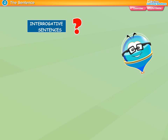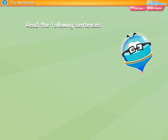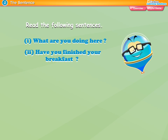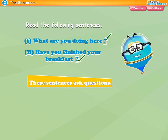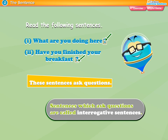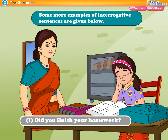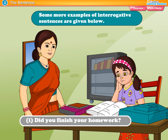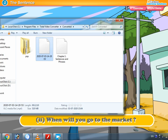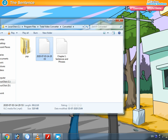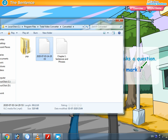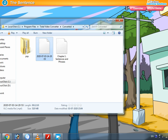Interrogative sentences. Read the following sentences: 'What are you doing here?' 'Have you finished your breakfast?' These sentences ask questions. Sentences which ask questions are called interrogative sentences. Some more examples: 'Did you finish your homework?' 'When will you go to the market?' Remember: an interrogative sentence asks a question and ends with a question mark.